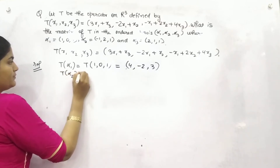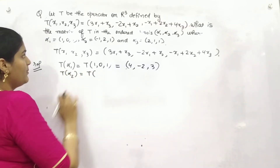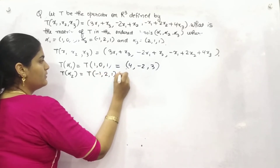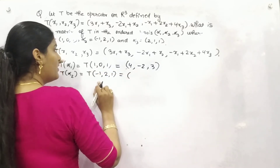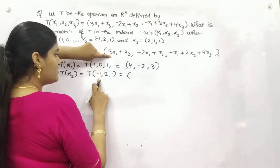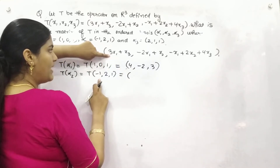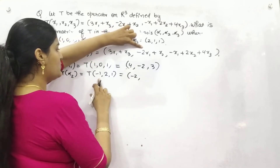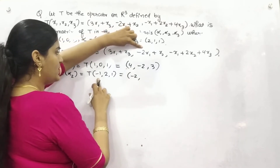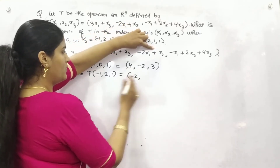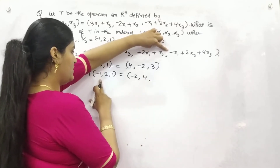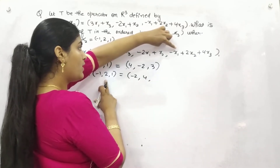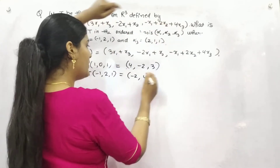For T·α2, α2 is (-1, 2, 1). Putting x1=-1: 3×(-1) + 1 = -2; minus 2×(-1) + 2 = 4; and minus 1 + 2×2 + 1 = 4 + 5 = 9. So T·α2 = (-2, 4, 9).